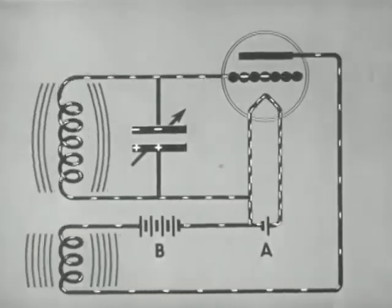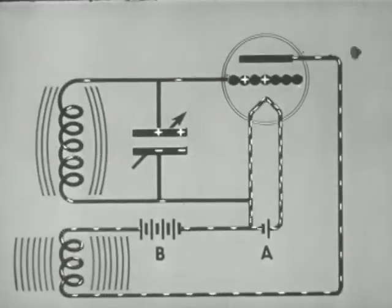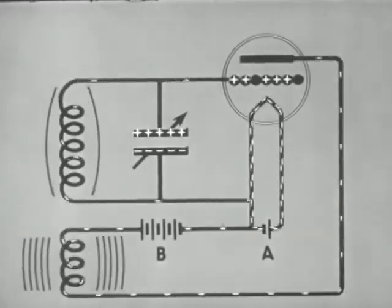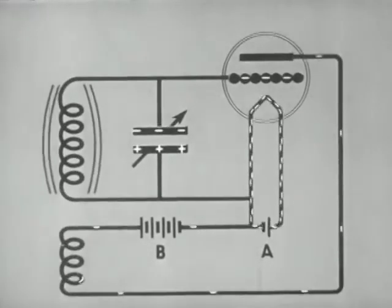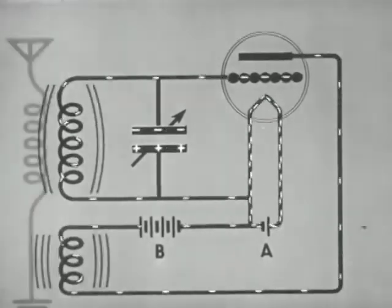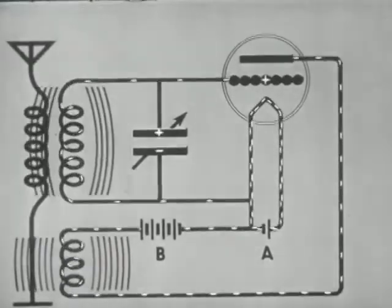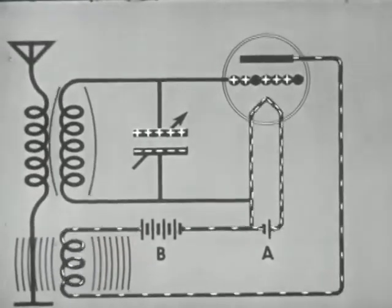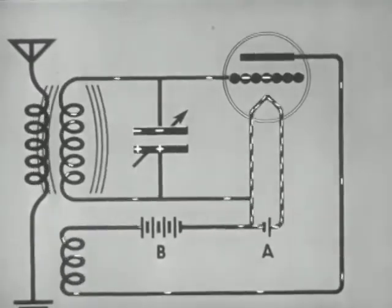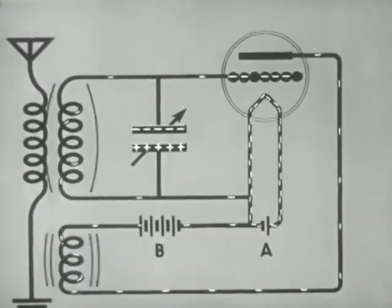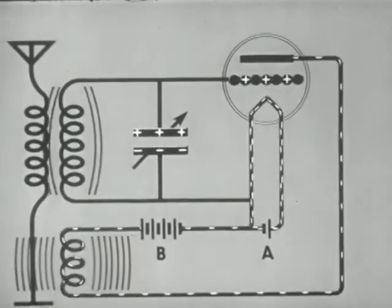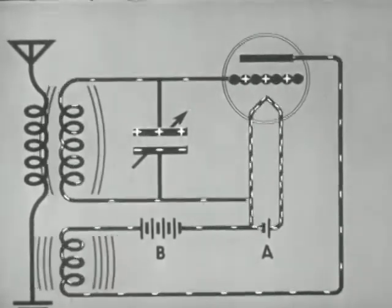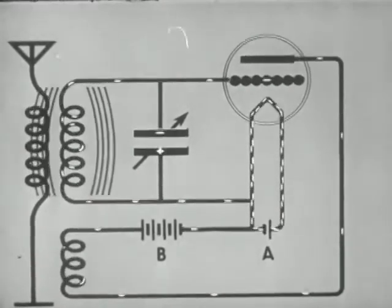The grid circuit of such an oscillator may be coupled to an antenna in the sending station. Energy is transferred by induction from the grid circuit to the aerial ground circuit, and electromagnetic waves are radiated out into space.